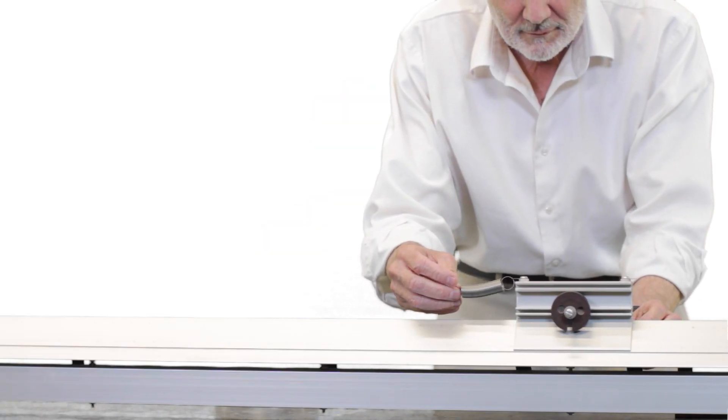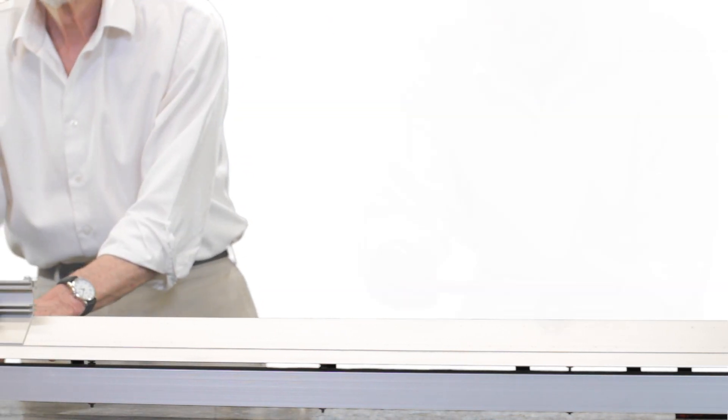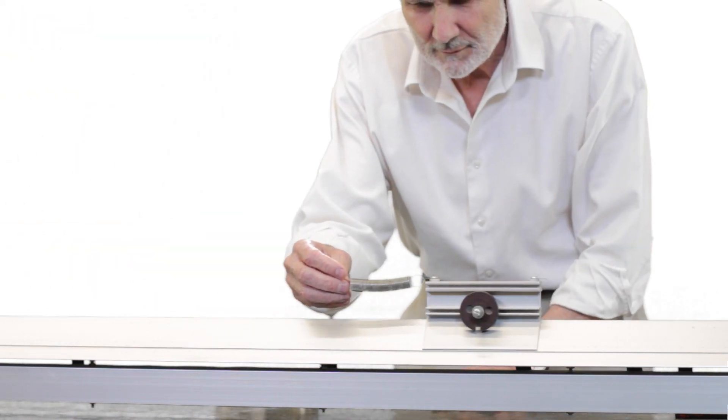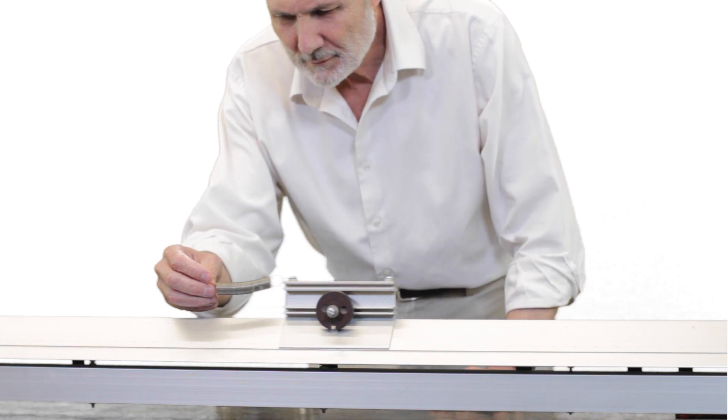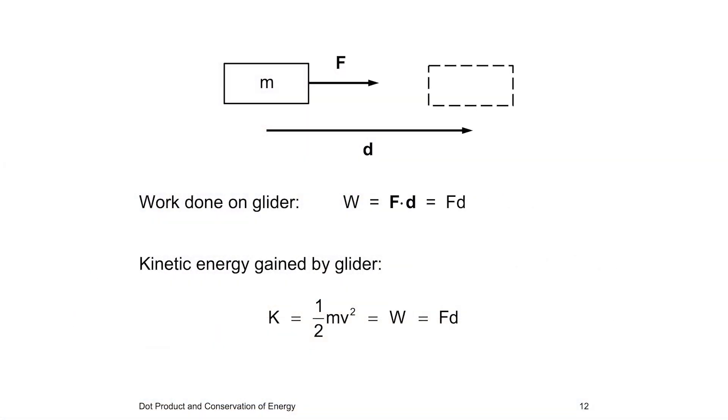Starting from the glider at rest, I am now going to use a spring to exert a constant horizontal force along the track over some distance. You know the force is constant because the spring is stretched a constant amount. The work is the force times the distance. By energy conservation, the glider gains an equal amount of kinetic energy.